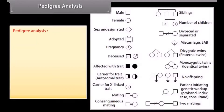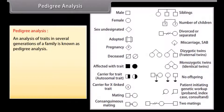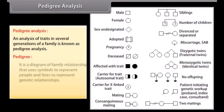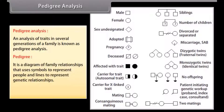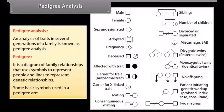Pedigree Analysis. An analysis of traits in several generations of a family is known as pedigree analysis. A pedigree is a diagram of family relationships that uses symbols to represent people and lines to represent genetic relationships. Some basic symbols used in a pedigree are shown here.